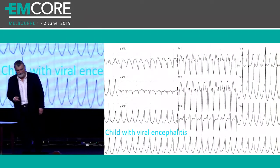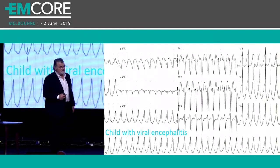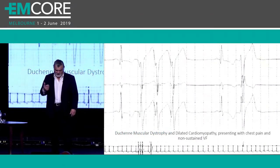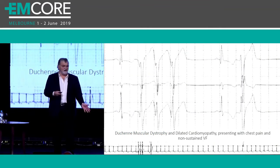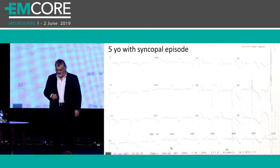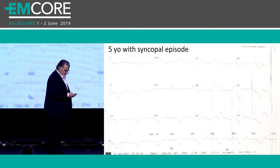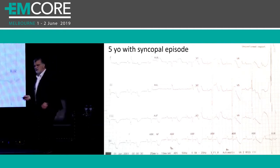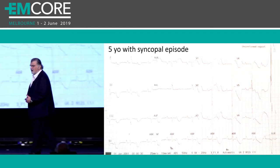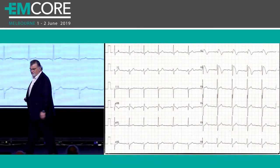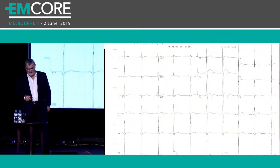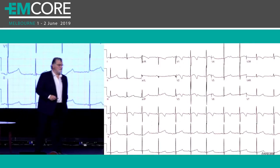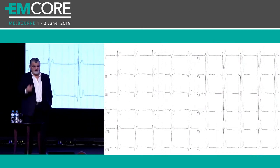Another case: a child with encephalitis complicated by myocarditis showing ventricular tachycardia on ECG. Another kid with a congenital cardiomyopathy going into VT — not sustained — with a history of a few episodes of VF. A fantastic ECG of a 5-year-old with syncope: P waves running at a rate of about 100 with QRS complexes having no relationship to them — complete heart block. Also shown: cardiomyopathy pattern, long QT, and short QT. ECGs are important.